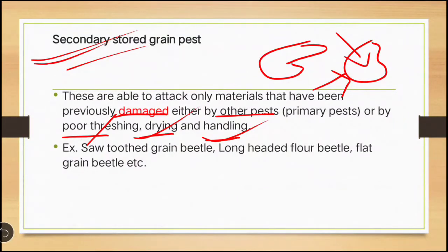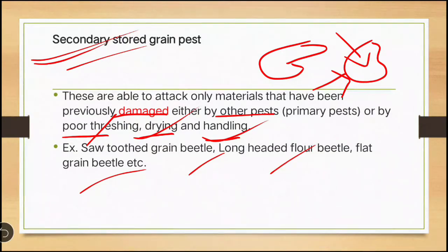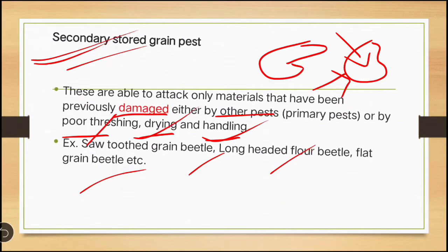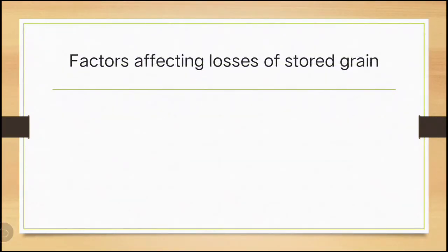Examples of secondary stored grain pests are: sawtoothed grain beetle, long-headed flour beetle, and flat grain beetle. Next, we will see the factors affecting the losses of stored grain.